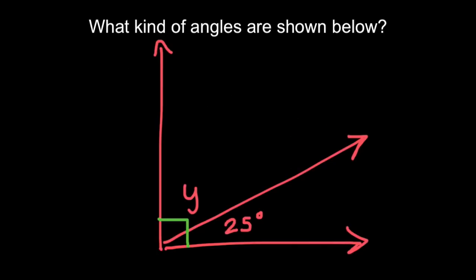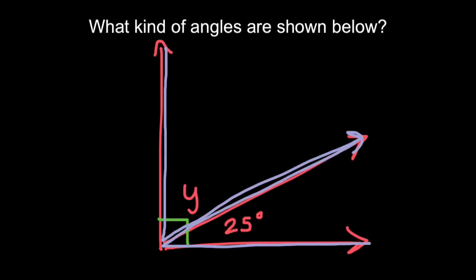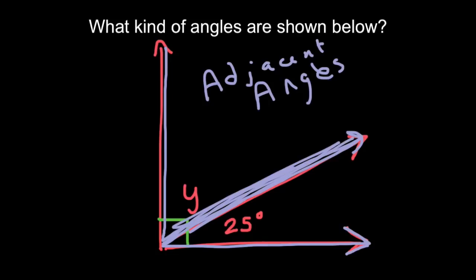What kind of angles are shown below? In this case, we have two angles. There's angle Y and this angle as well. This one's 25 degrees. They are adjacent angles because they're next to each other. They share this middle side and the vertex is the same. In this case, they both add up to 90 degrees. So if you wanted to find the size of Y, you could go 90 minus 25, which has to be 65 degrees.